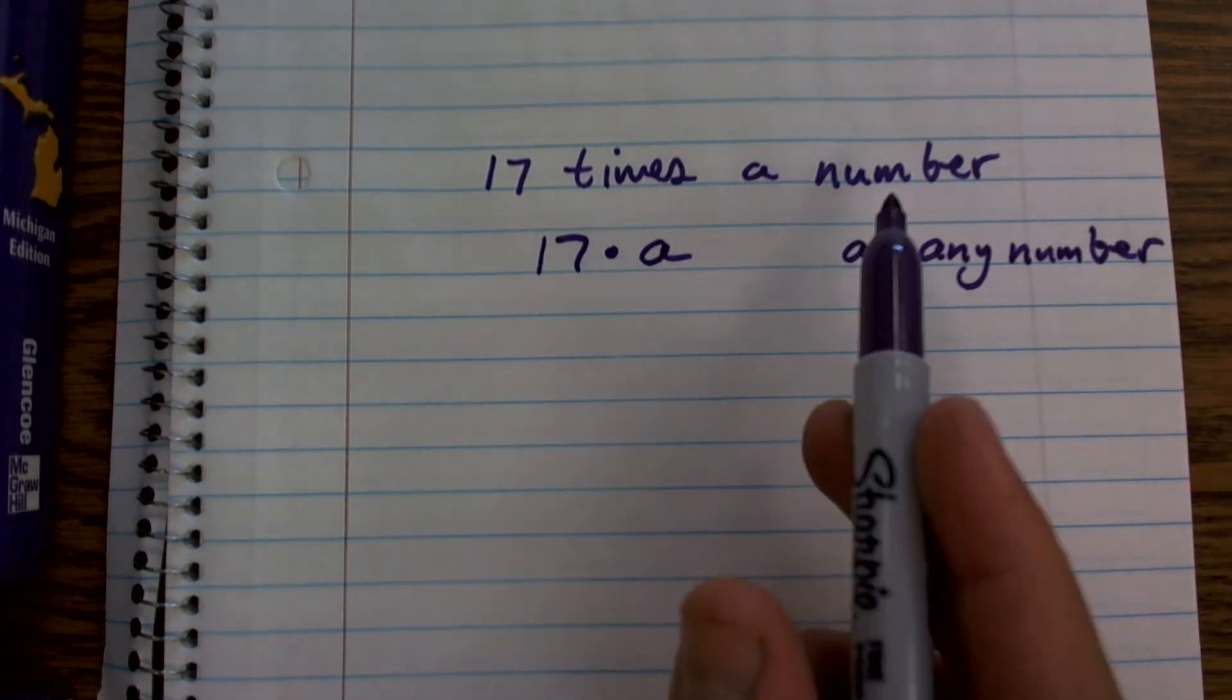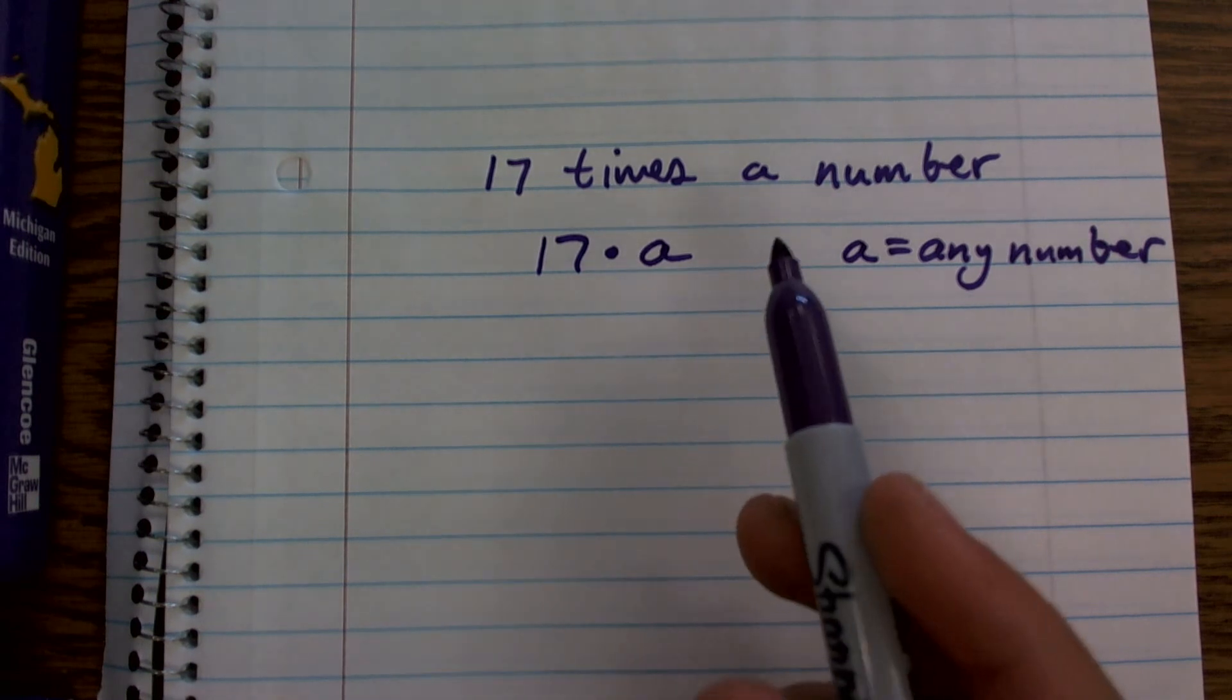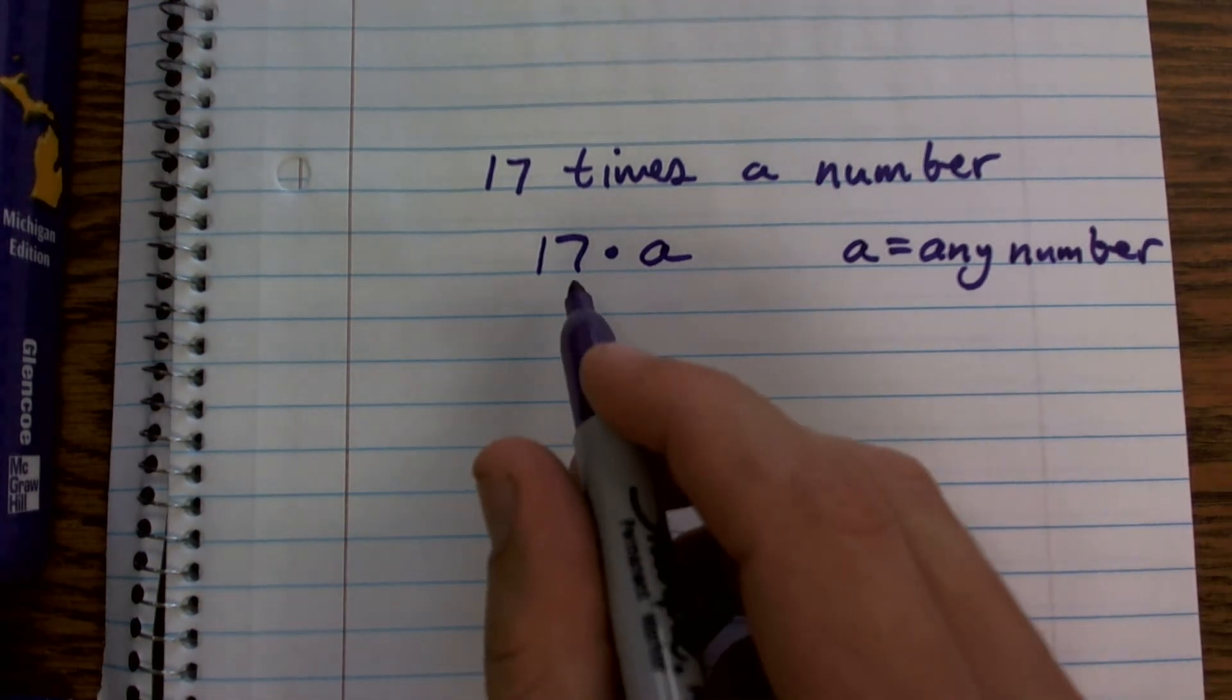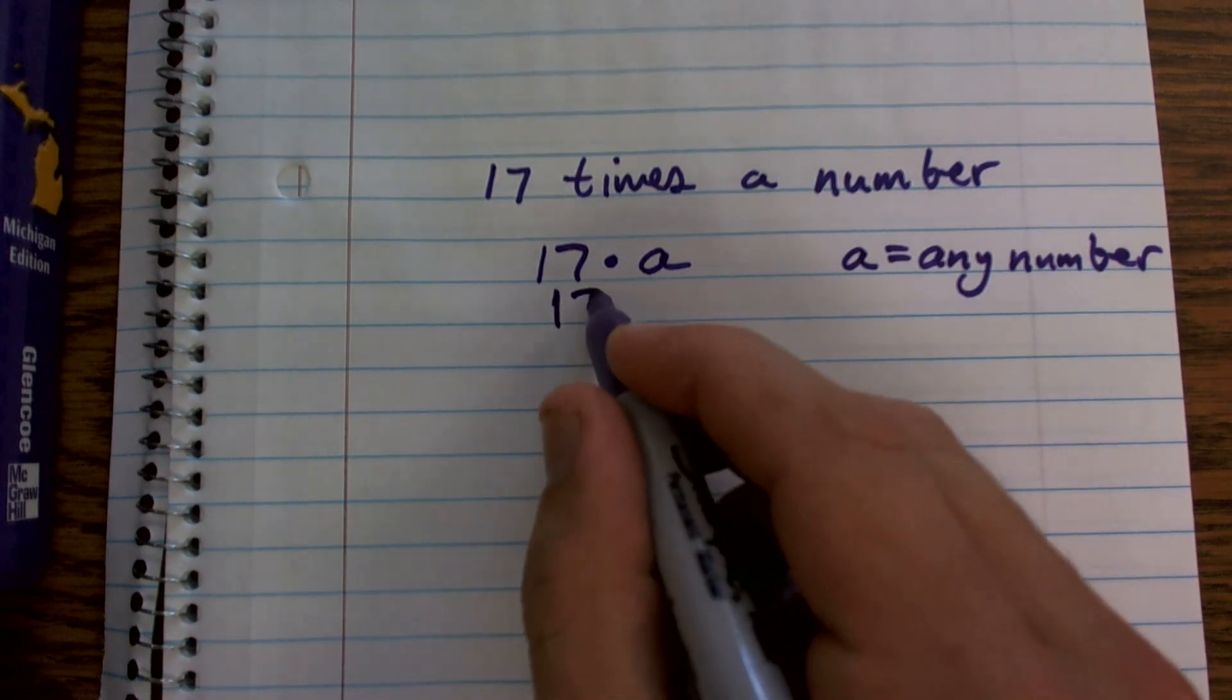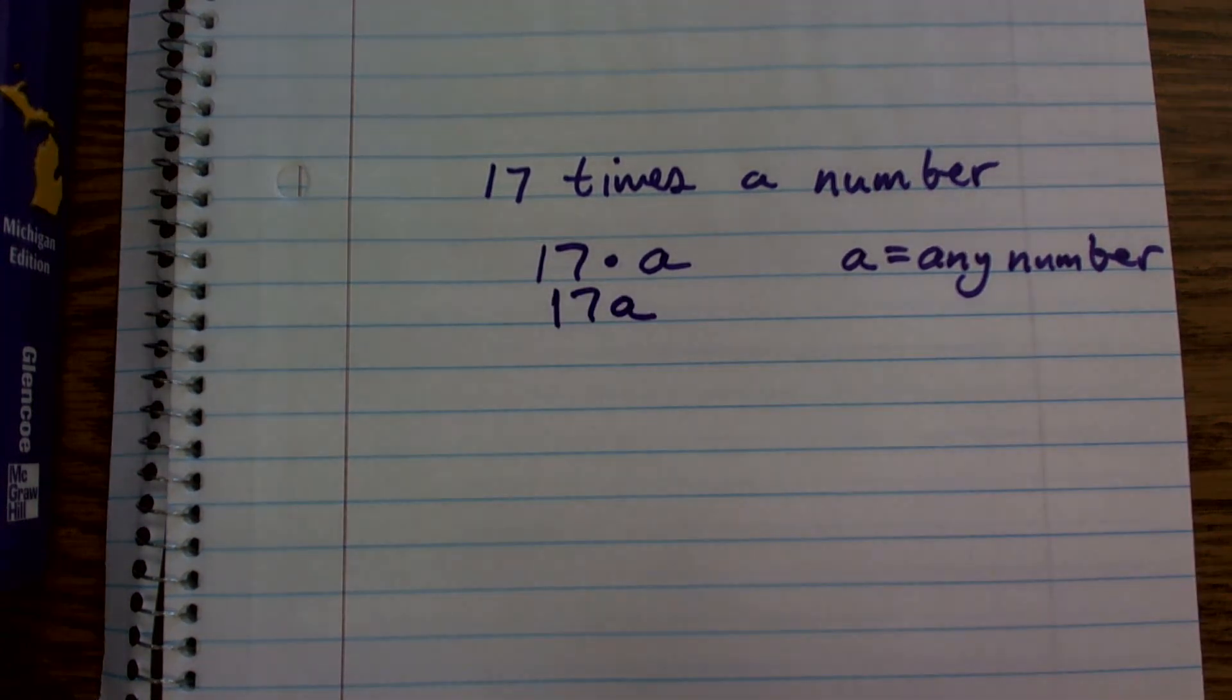So 17 times a number would just be 17 times a. And then fortunately for multiplication, we do not need to represent the multiplication symbol when multiplying a number times a variable. So I'll just write it as 17a. And that is how we write our algebraic expression.